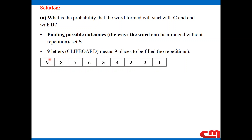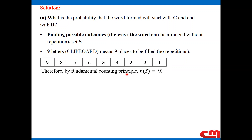The question is how do we find the total number of ways given these different choices at different positions? This is where we recall the fundamental counting principle. Therefore, by the fundamental counting principle, we have nine times eight times seven times six and so on up to one, which can be shortened as nine factorial. So our possible outcomes are nine factorial.